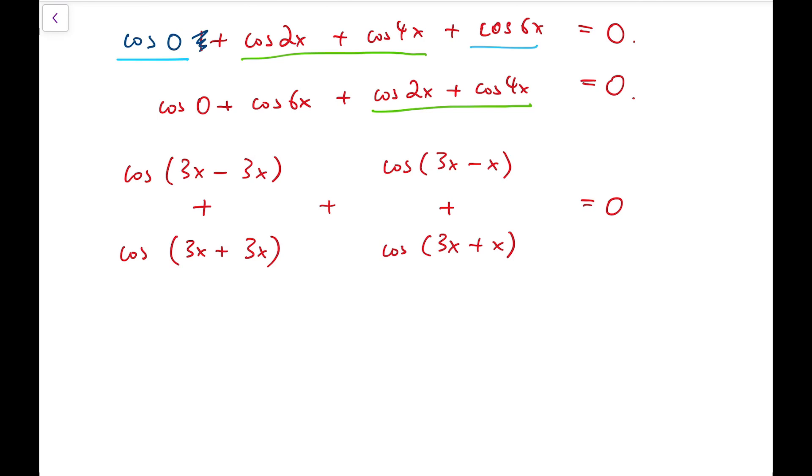Recalling the compound angle formula, the sum becomes 2cos 3x·cos 3x + 2cos 3x·cos x = 0. From this line to the bottom, this is the sum-to-product formula. For the first group, it could be written as 2cos²3x, but I'm using the same method for both groups.